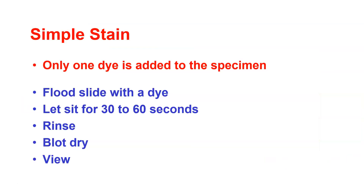Simple staining: when we do simple staining we add only one dye to the specimen. We flood the slide with dye, let it sit for 30 to 60 seconds, rinse it, blot dry, and then you can see it.